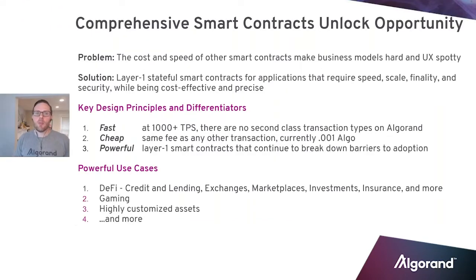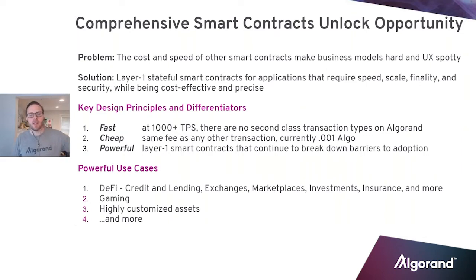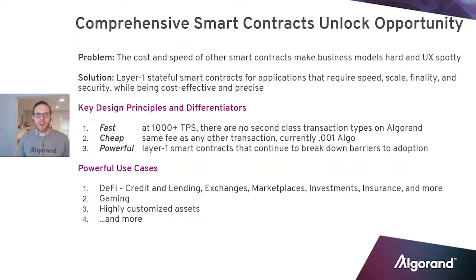Finally, and this is the big one for this release: comprehensive smart contracts. So what's the problem we're trying to solve here? We've had stateless smart contracts, and there's lots of things you can do with that. The primary problem we're trying to solve is when you look across other chains — there are issues with gas fees, and the cost and speed of these smart contracts are making business models really hard and the user experience really spotty.